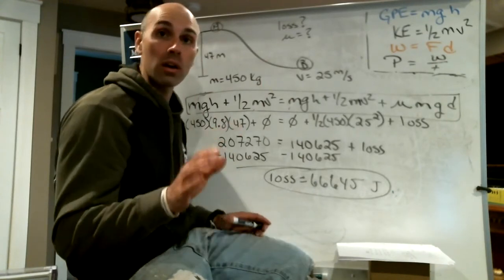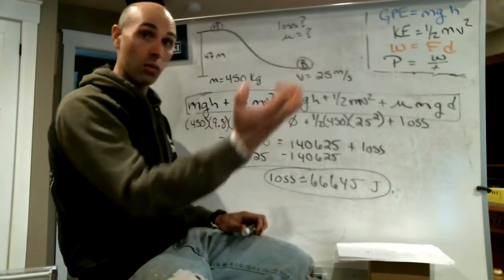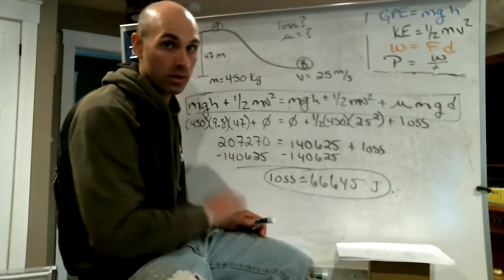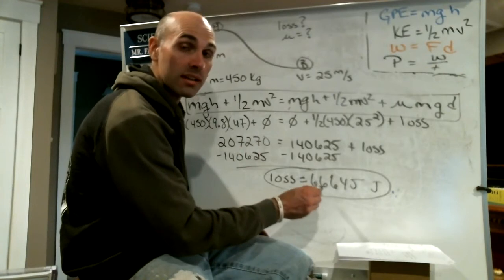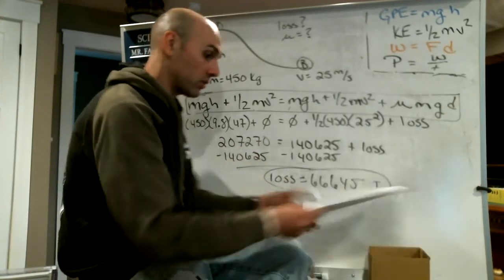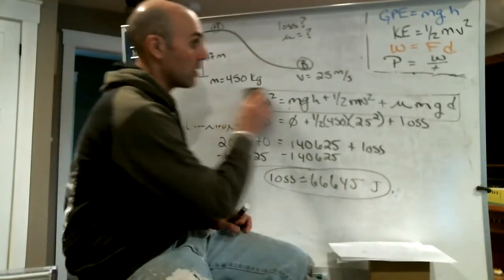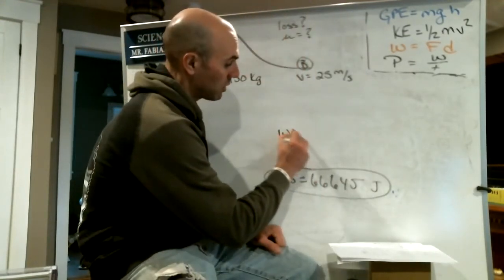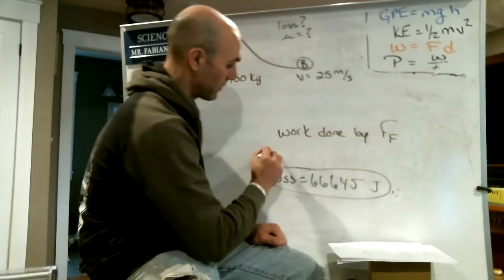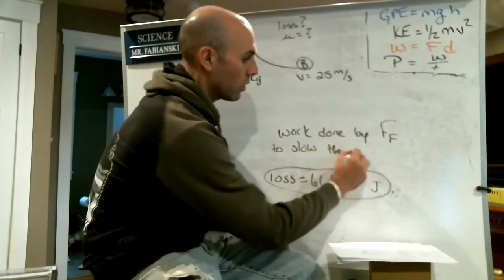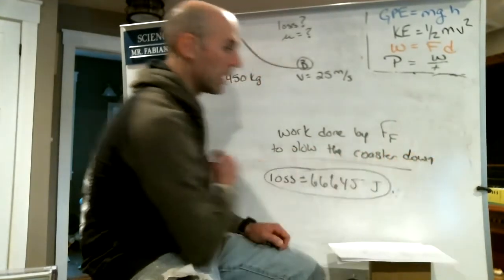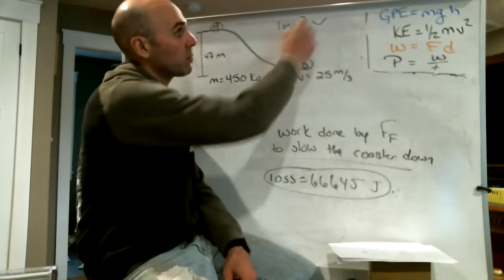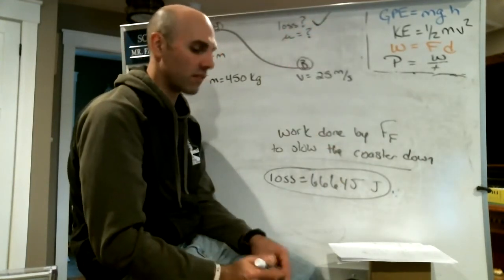To slow a car down, you apply a force — you do work on it. So this 66,645 joules was the work done by the force of friction to slow the roller coaster down. That was our first answer: energy loss equals 66,645 joules.